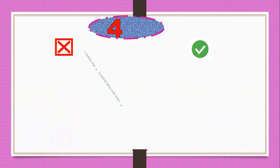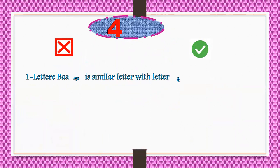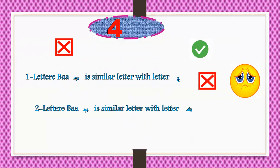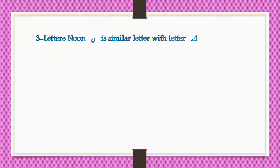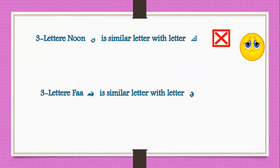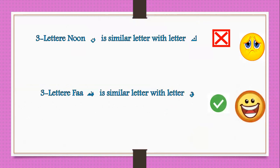Let's go to the fourth type of questions: true or false. Letter Ba is similar with letter J — wrong. Letter Ba is similar with letter Sa — right, well done. Letter Nun is similar with letter Qaf — wrong. Letter Fa is similar with letter Qaaf — yes, right. Fa and Qaaf are similar. Very good.